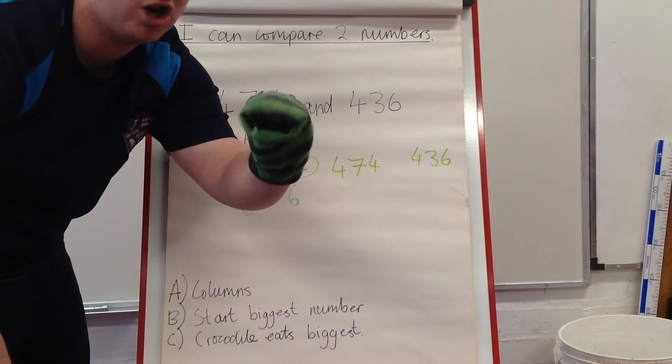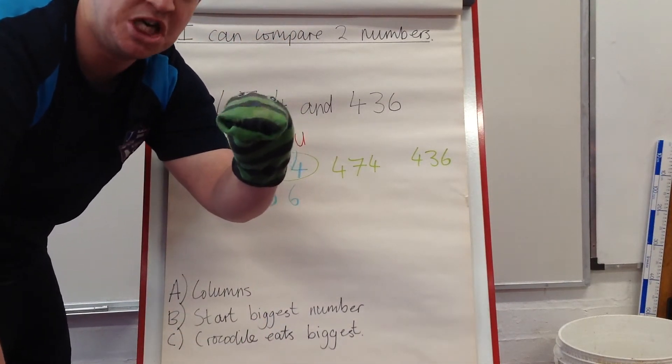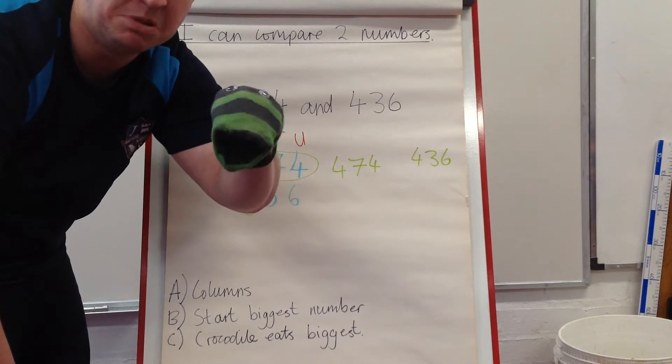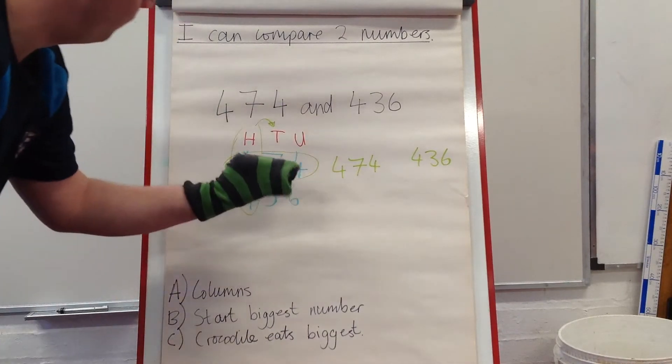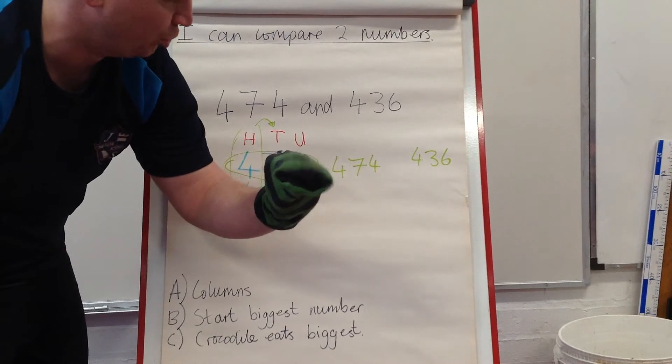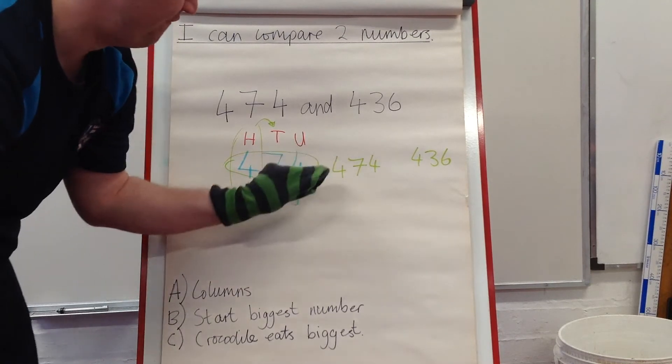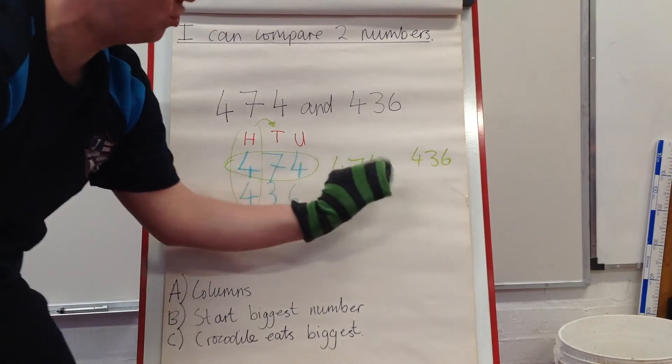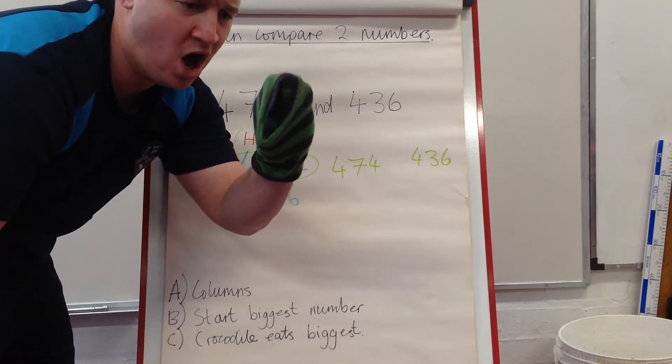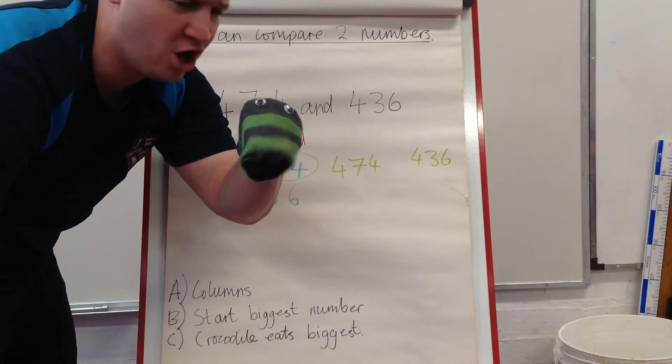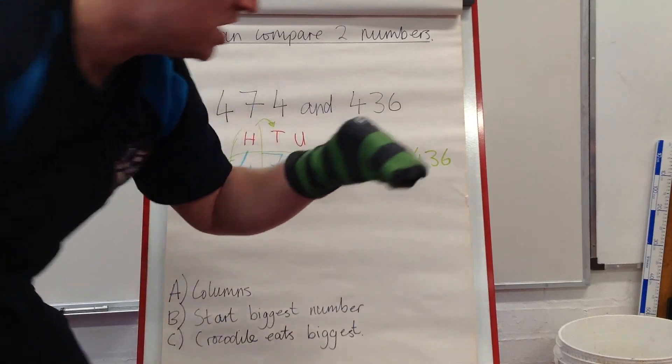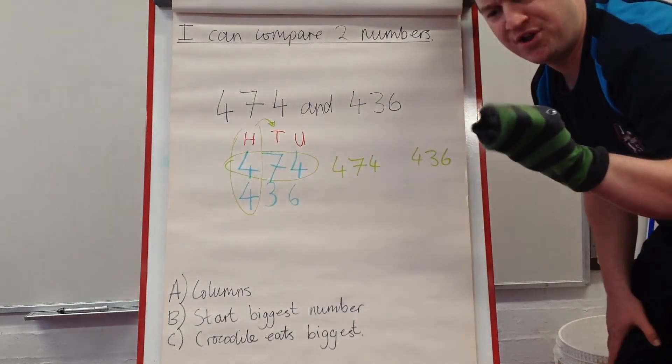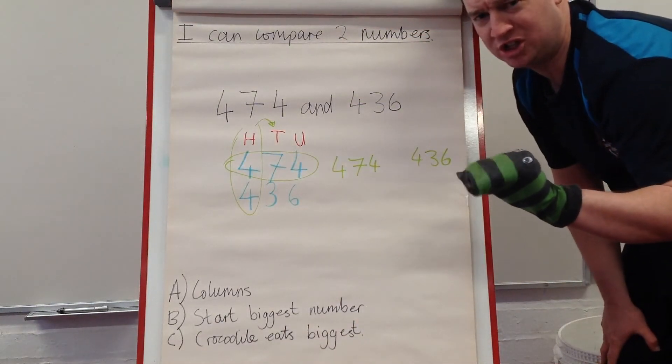Now, Charlie Crocodile is going to eat the biggest number. Which one's the biggest number? Is it 474 or 436? I think it's 474. My mouth is going to eat 474.